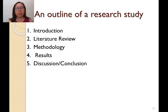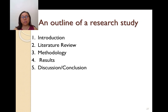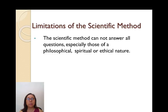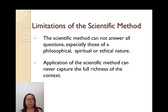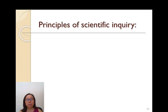The relevance of this to our course is to focus on step four — the results — to look at the data and make sense of it. We'll learn different ways of collecting data. When we say scientific method is the best way to know something, we also have to recognize its limitations: it cannot answer all questions, especially those of a philosophical, spiritual, or ethical nature. It can never capture the full richness of context, and there can be measurement errors.